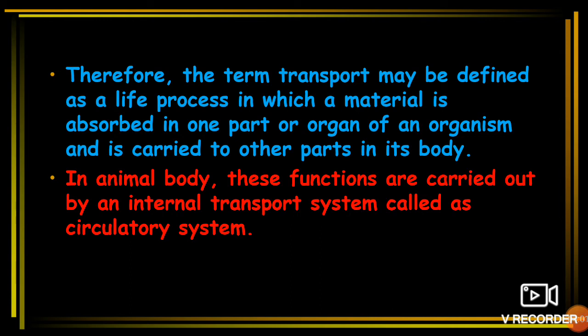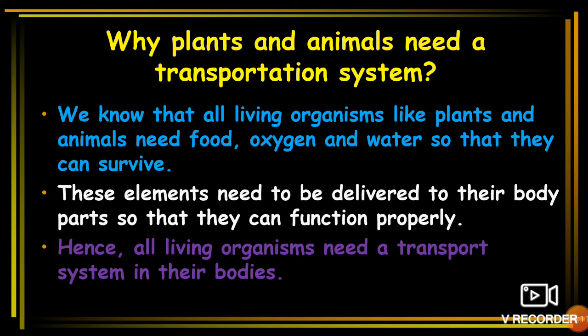Today we will see how the circulatory system works in our body. Before that, let's understand why plants and animals need a transport system. All living organisms like plants and animals need food, oxygen, and water so that they can survive.